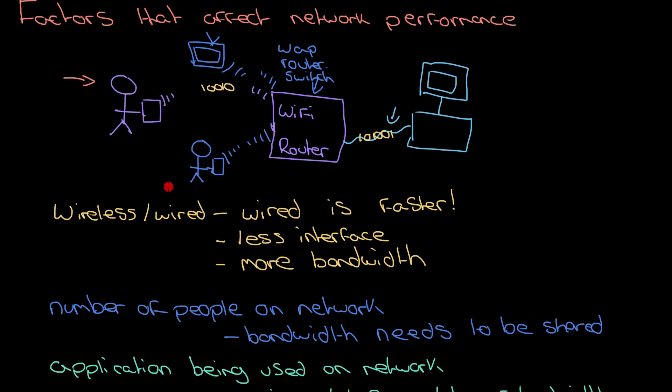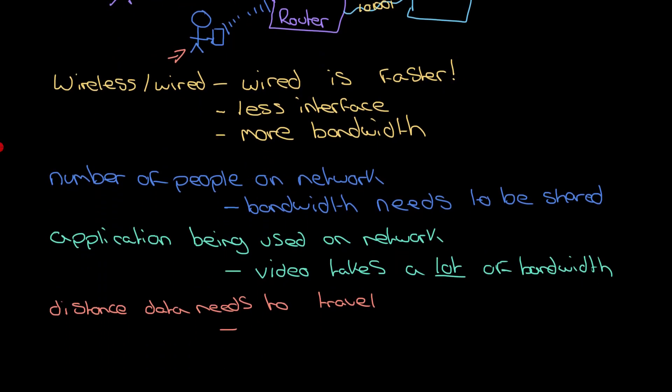So going back to our example, this person here, if they are actually physically further away from the Wi-Fi router compared to this person, then it's more likely that they're going to have more interference which is going to reduce the bandwidth. So there might be like another wall in the way which will cause some issues and that will slow down this person's connection to the network.